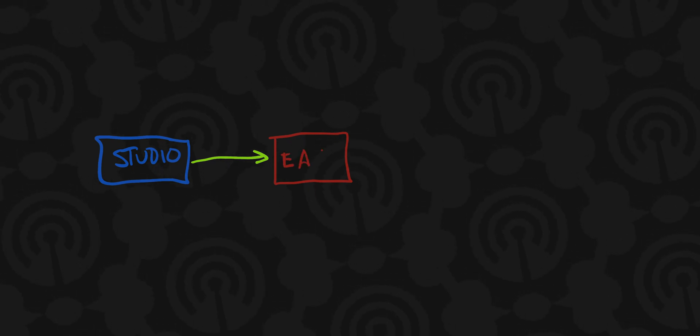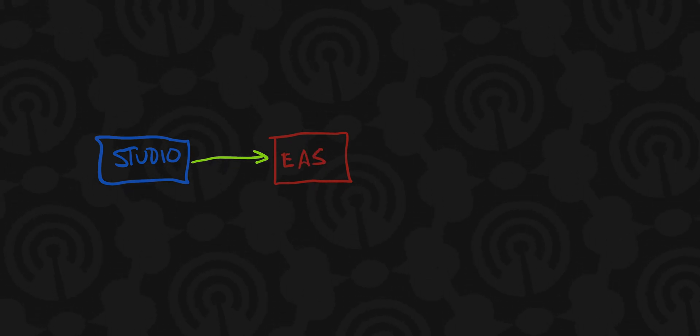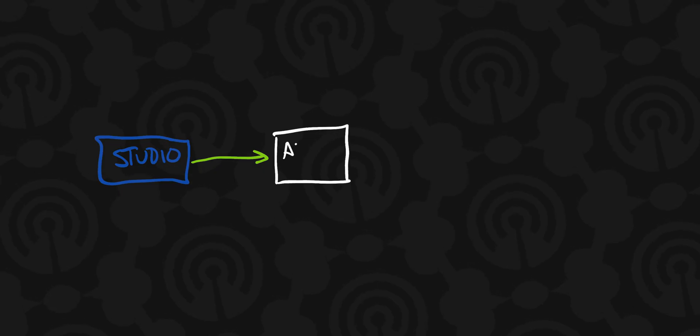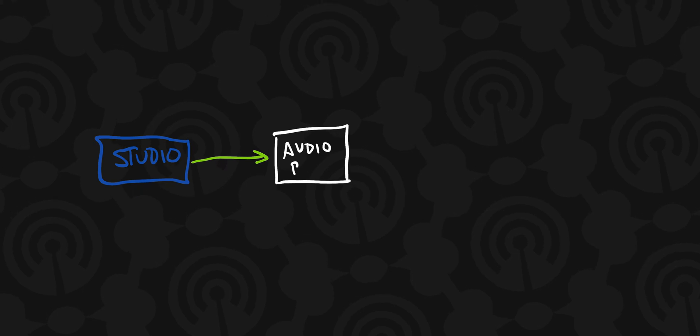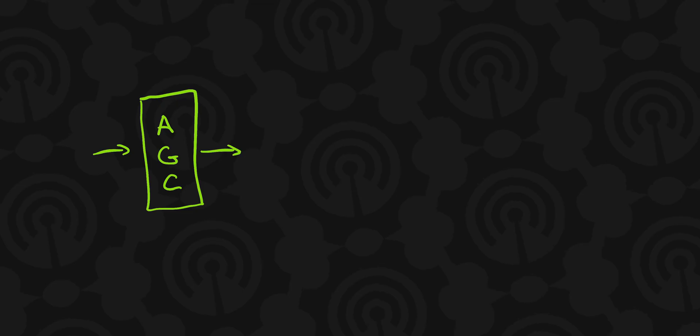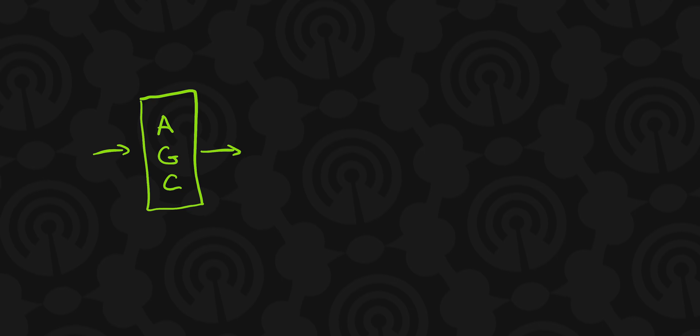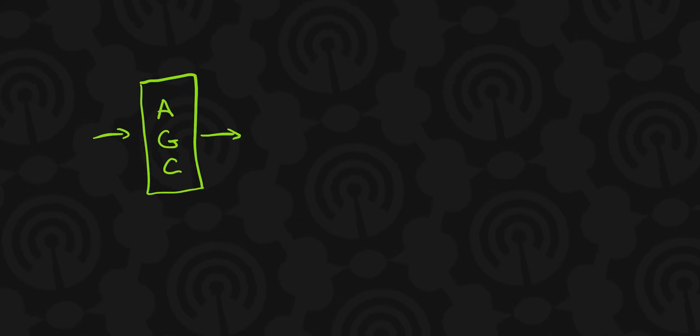Some stations may have an emergency alert system box at this step, but if there's no EAS box, then this is where audio processing comes into play. The audio processor does a few things. Modern day audio processors have several stages. The first is the AGC, or automatic gain control. Think of this as turning the volume up and down based on how loud the audio is.